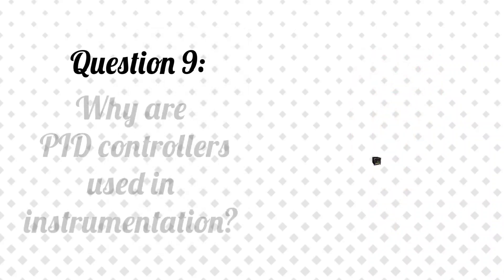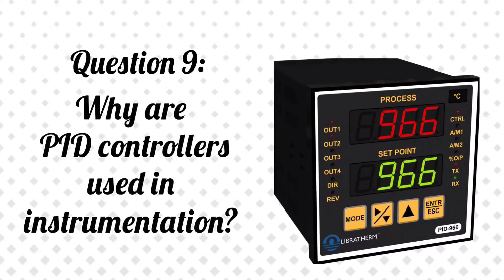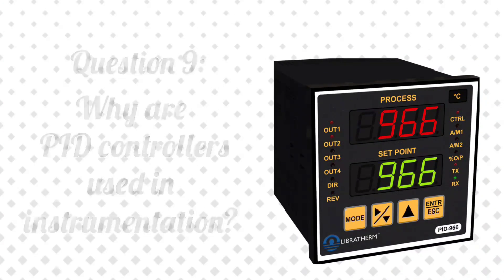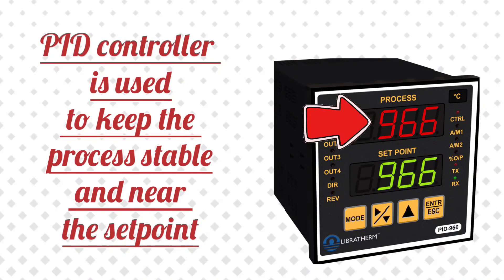Question 9: Why are PID controllers used in instrumentation? Answer: A PID controller is used to keep the process stable and near the set point.